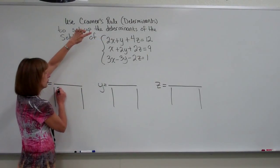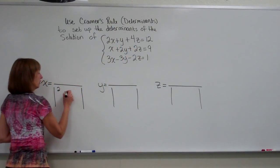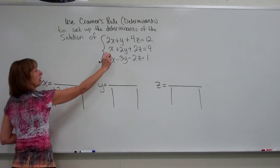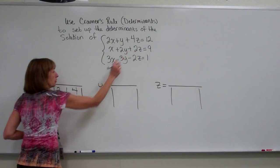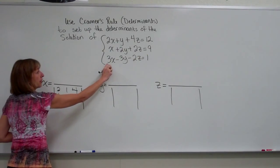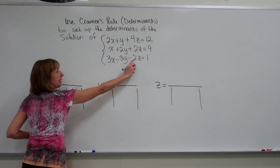So I have 2, 1, 4, 1, 2, 2, and 3, negative 3, negative 2.